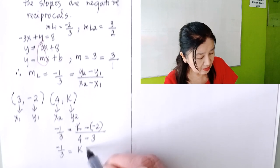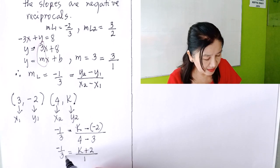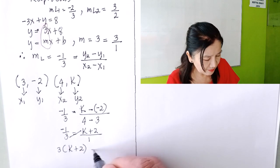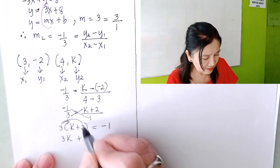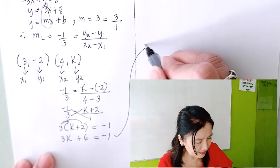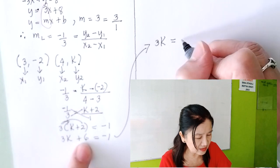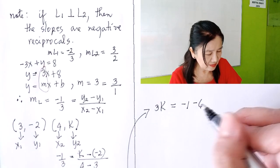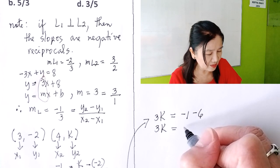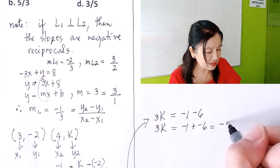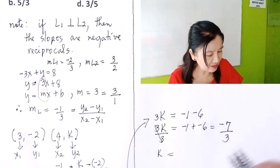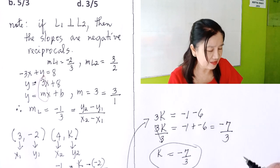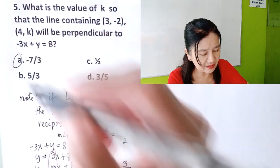Cross multiply: negative 1 equals 3 times (k plus 2). Simplify: 3k plus 6 equals negative 1. Transpose 6: 3k equals negative 1 minus 6, which is negative 7. Divide by 3: k equals negative 7 over 3, or negative seven-thirds. Looking at the choices, the answer is letter A. I hope I was of help to you. Always remember: add kindness, subtract judgment, multiply understanding — that's Mrs. O's good life equation.